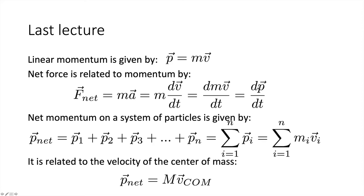The change in momentum over time equals the net force. The net momentum of a system of particles is given by the sum of all individual momenta, written as the sum of m_i v_i. We saw that this relates to the velocity of the centre of mass: net momentum equals total mass times the velocity of the centre of mass.